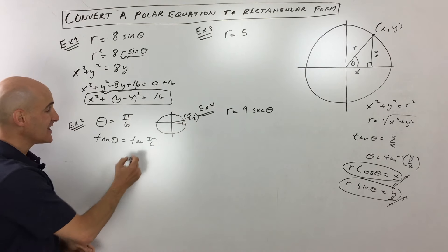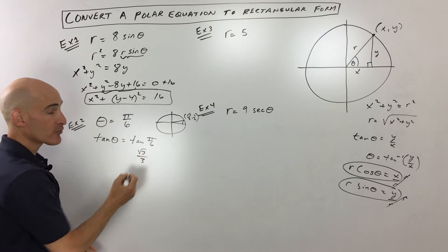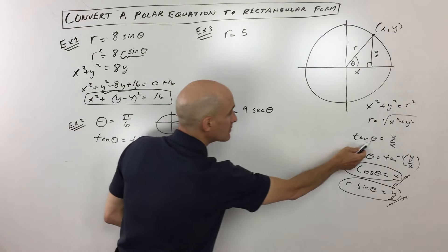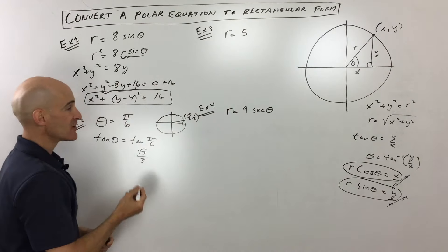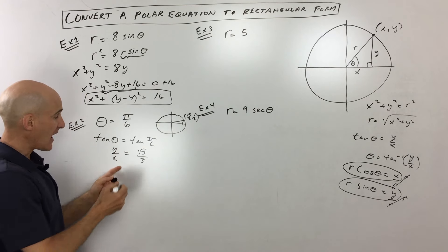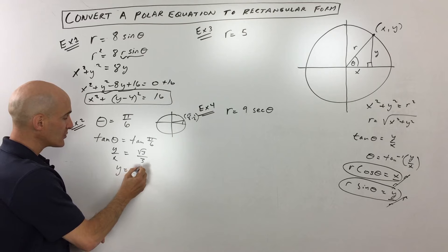Tangent of theta, you can see from our earlier discussion there, that's equal to y divided by x. And if we multiply both sides by x, you can see that y equals square root three over three x.